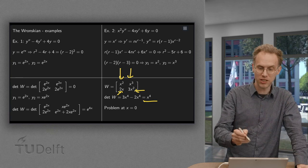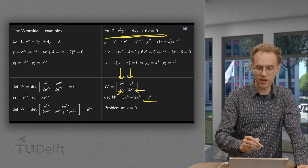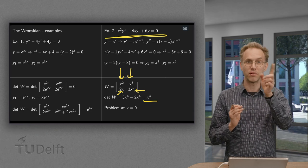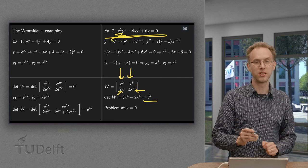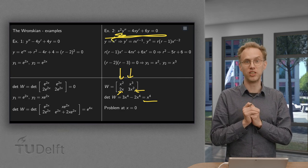And of course we could have foreseen this because look at your differential equation here. It has x² times y'', so in x = 0 this term here drops out and you have a problem in your differential equation.